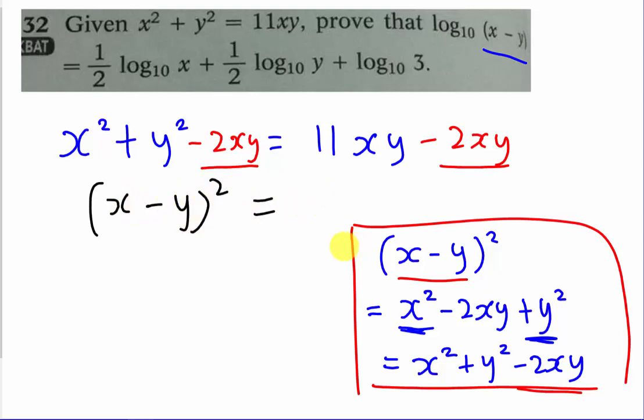Because of this formula, I know that x squared plus y squared minus 2xy is equal to x minus y squared. Then 11xy minus 2xy is 9xy.